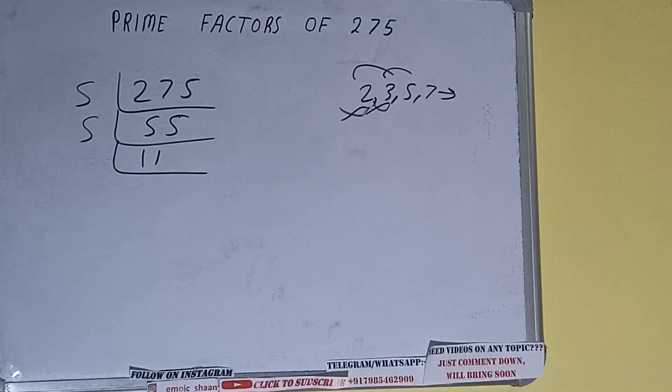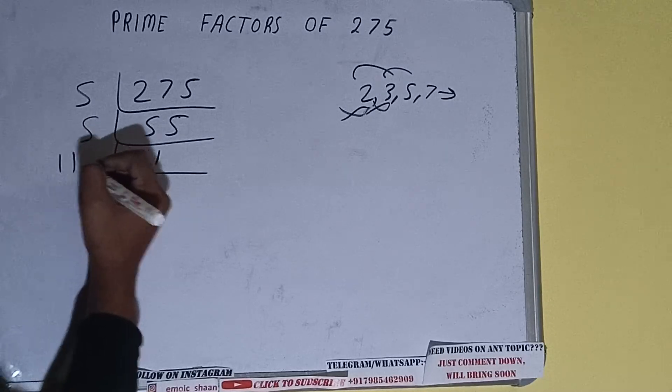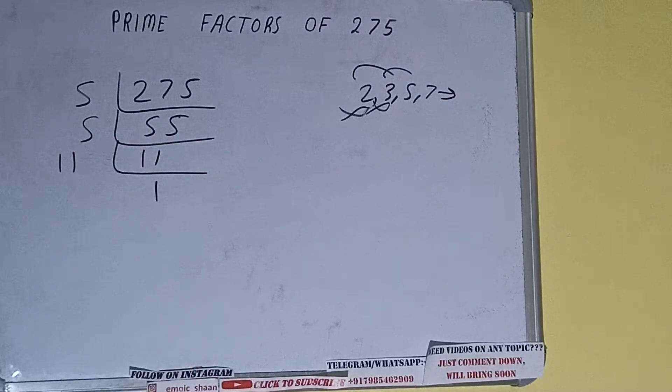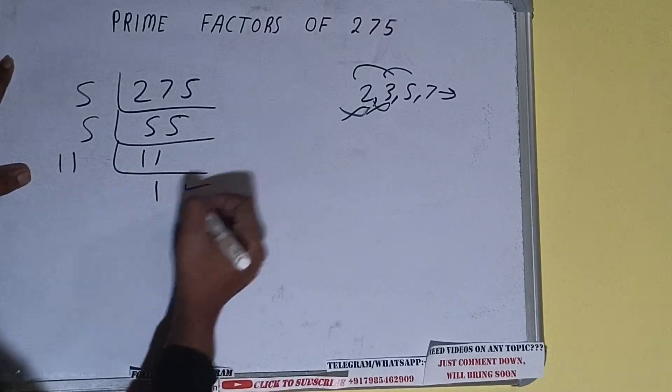And then, 11 is also a prime number, so it is only divisible by itself, that is 11. And once we do so, we'll be getting one. Once we get one, we need to stop and do one last thing.